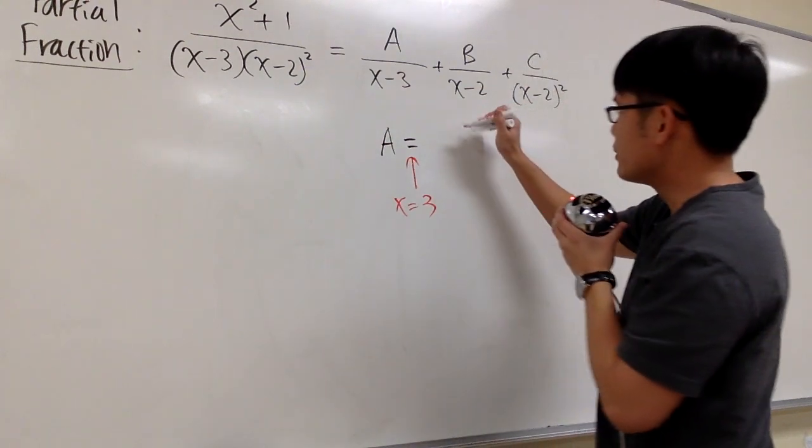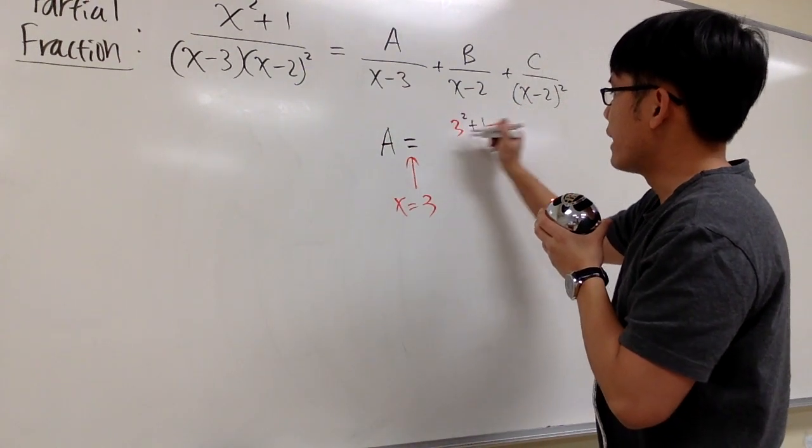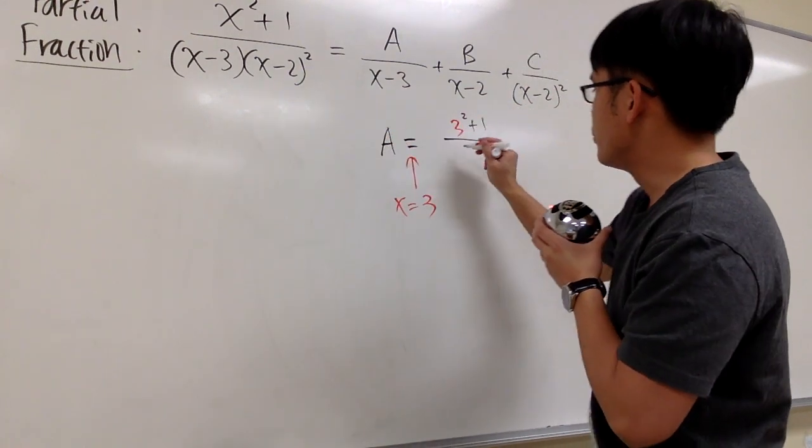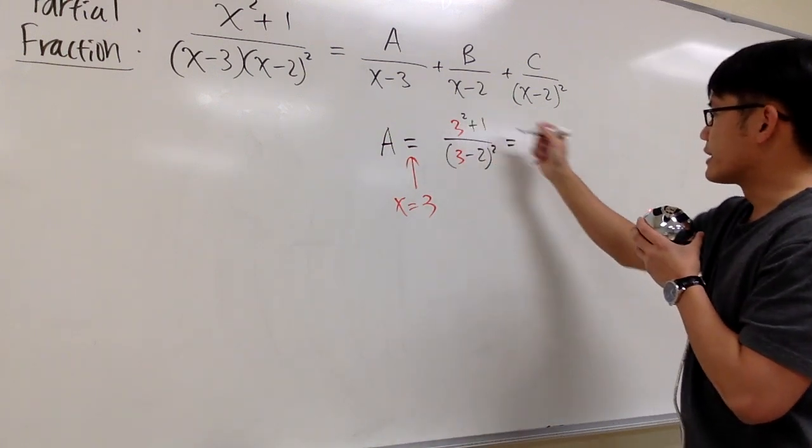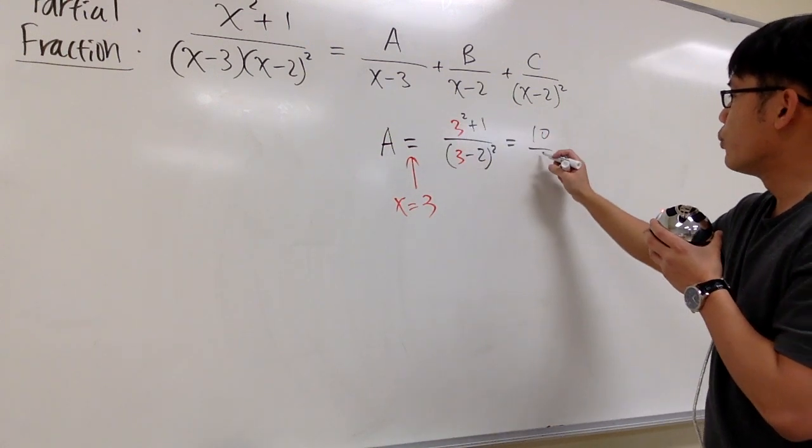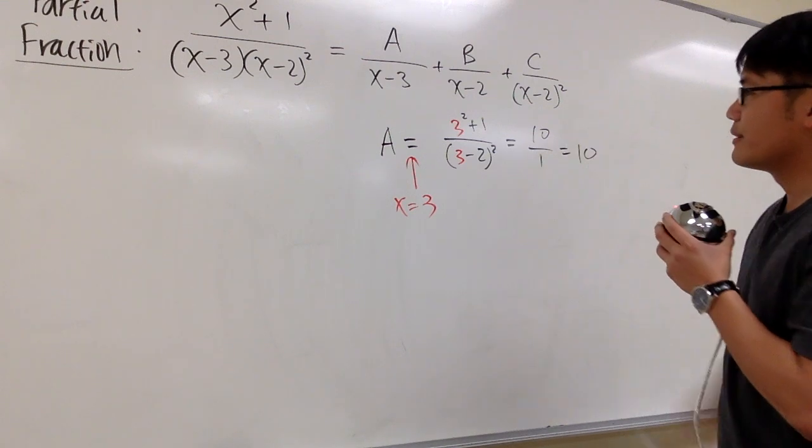So you just start plugging that. You work this out, you get 3 squared plus 1 over 3 minus 2 to the second power. On the top you get 10, on the bottom you get 1, so of course that will be 10.